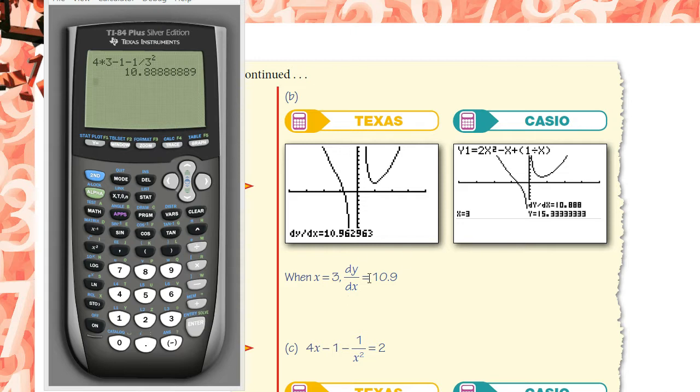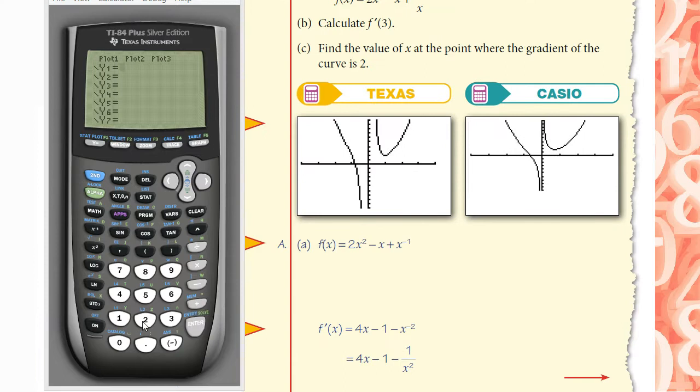Now, so this is how it works. I can calculate, but your calculator can also do that for you. If I put in the function here, what was it? 2x squared minus x plus x to the power of negative 1.